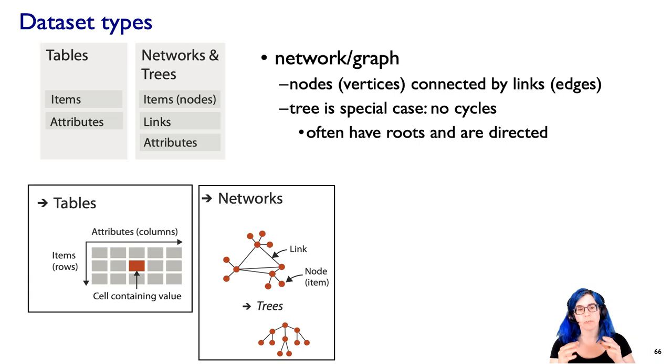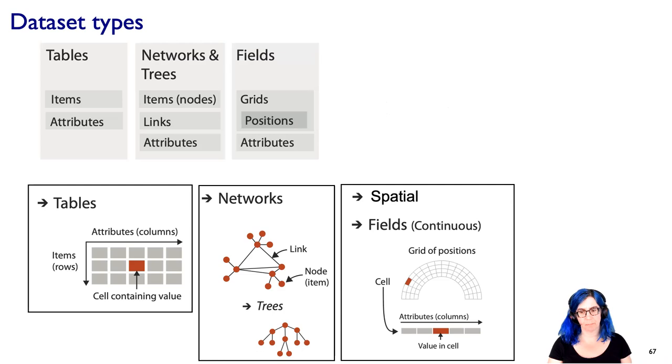And actually, before we go on to spatial data, let me point out one more thing, which is that attributes for tabular data, we thought, well, there's items and there's attributes. In a network context, the attributes could either be attached to the nodes or to the links, or of course, to both. So you can distinguish between node attributes and link attributes with network datasets.